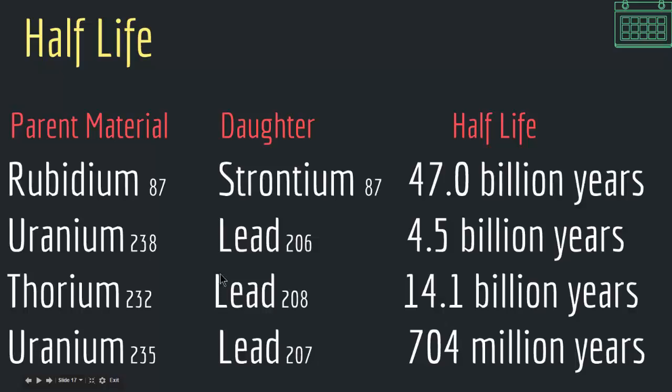We have uranium-238 that turns into lead-206, and the half-life is 4.5 billion years. We have thorium-232 that turns into lead-208, and the half-life is 14.1 billion years. We have uranium-235 that turns into lead-207, and the half-life is 704 million years.